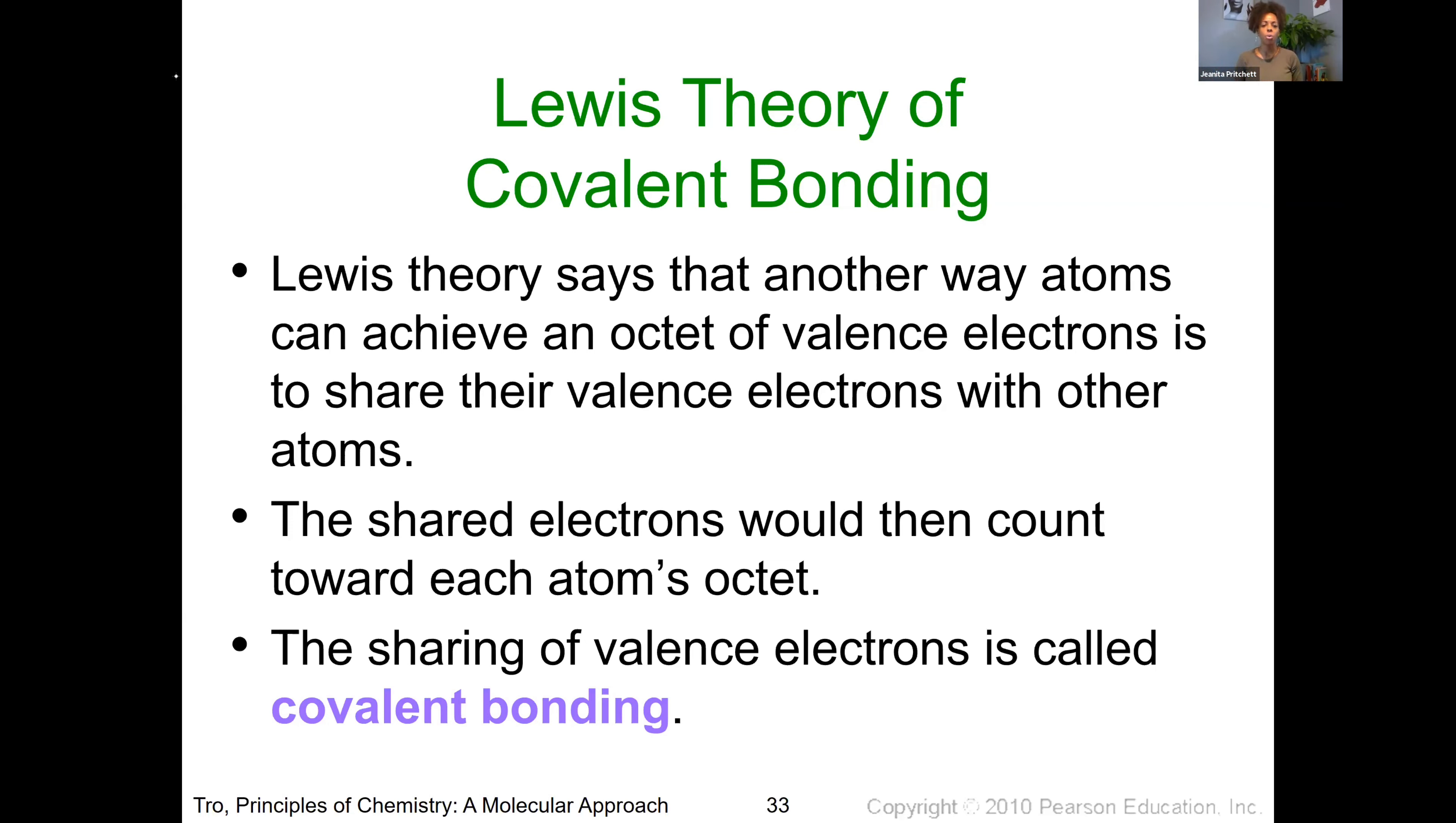Now Lewis theory says that another way that we can actually achieve that octet is through this sharing process. And that octet whenever we're counting how many electrons are found around an atom, we're going to be taking into account not only the electrons that are solely on it, but also those that are being shared between two different atoms. And so that sharing that we now know is what we are calling covalent bonding.